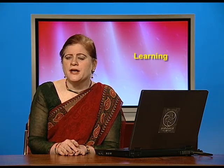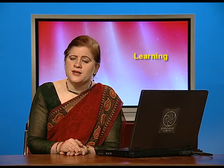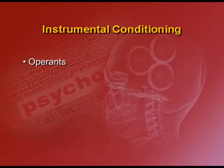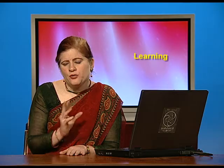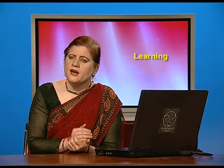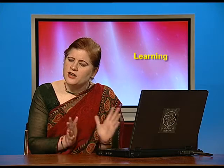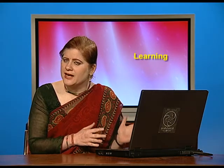Operant conditioning is also known as instrumental conditioning. It was given by B.F. Skinner, and the terms we basically use are operants, reactions, stimuli, and aversions and rewards for describing this kind of conditioning. Operants are the voluntary reactions — they are emitted voluntarily and are under control of the organism. The organism decides whether to perform a certain learnt behaviour or not. This is in contrast to classical conditioning, where the reactions dealt with were reflexes and the organism had no control.